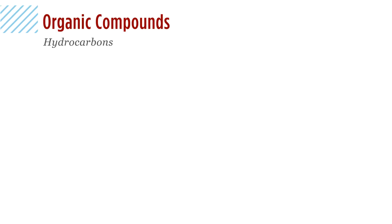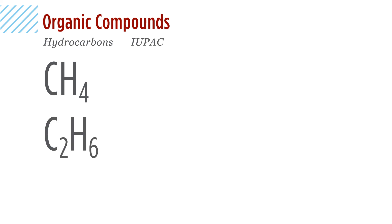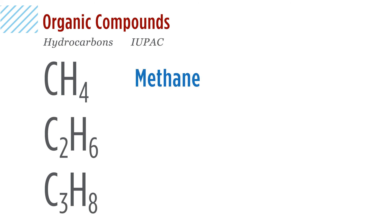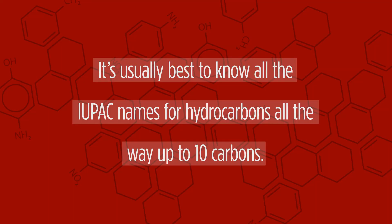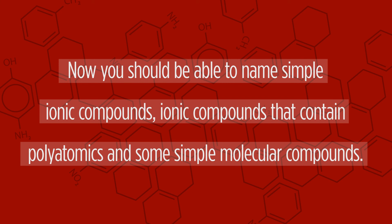The other compounds to watch for are organic compounds, specifically hydrocarbons. For hydrocarbons, we'll learn the IUPAC names — the official, internationally agreed-upon chemical names. For this video, just a few: one carbon is methane, two carbons is ethane, three carbons is propane. It's best to know IUPAC names for hydrocarbons up to ten carbons. Now you should be able to name simple ionic compounds, ionic compounds containing polyatomics, and some simple molecular compounds.